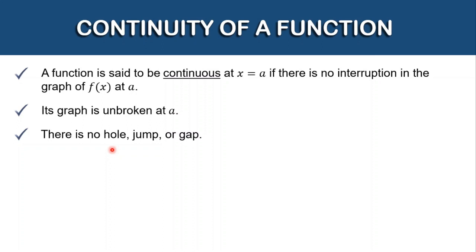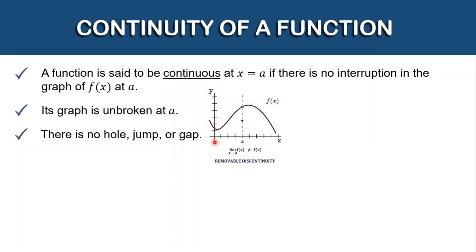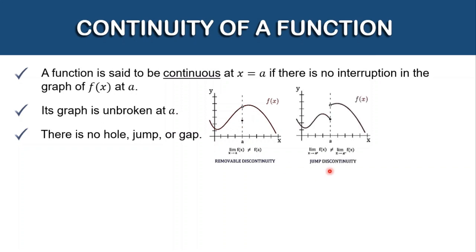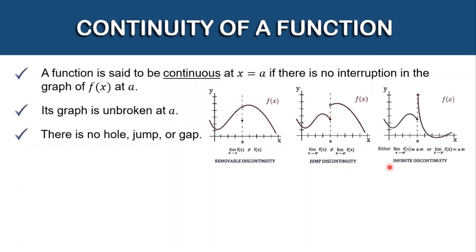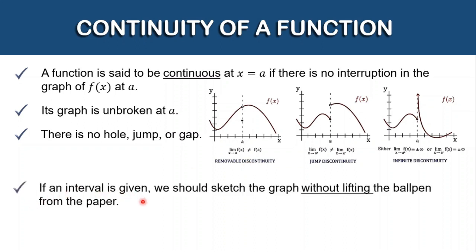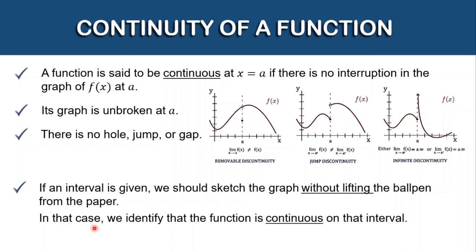Let's look at some examples of graphs. The first is called removable discontinuity — as you can see, there is a hole in this graph, so this is not continuous. The second graph is called jump discontinuity, where there is a gap. The third is an example of infinite discontinuity. If an interval is given, we should sketch the graph without lifting the pen from the paper, and in that case, the function is continuous on that interval.